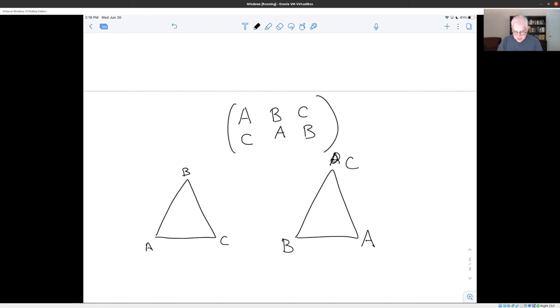B came from A. So the B goes where the A was. And C came from B. So you put the C where the B was. And that's the rule that he's using to go back and forth between permutations and symmetries.